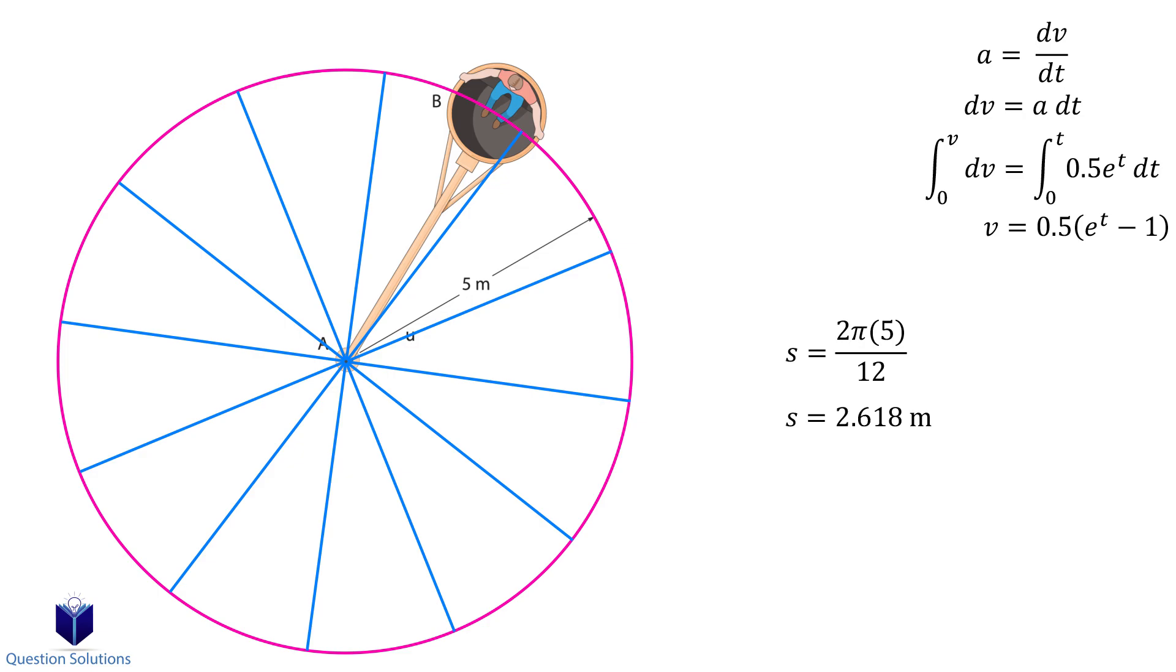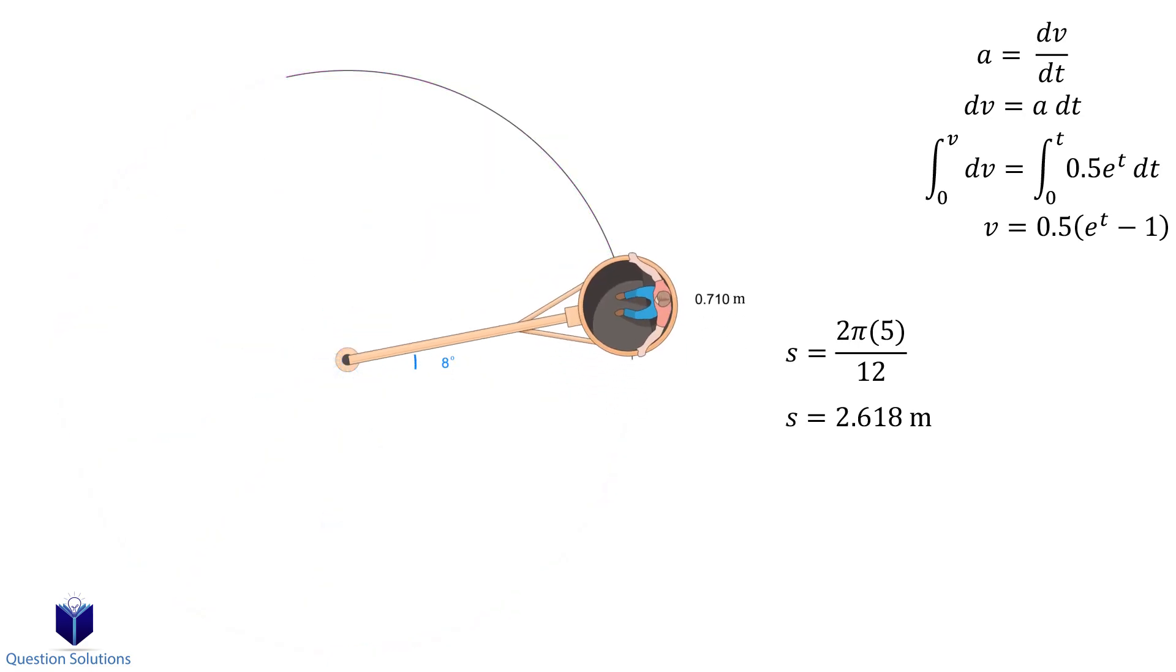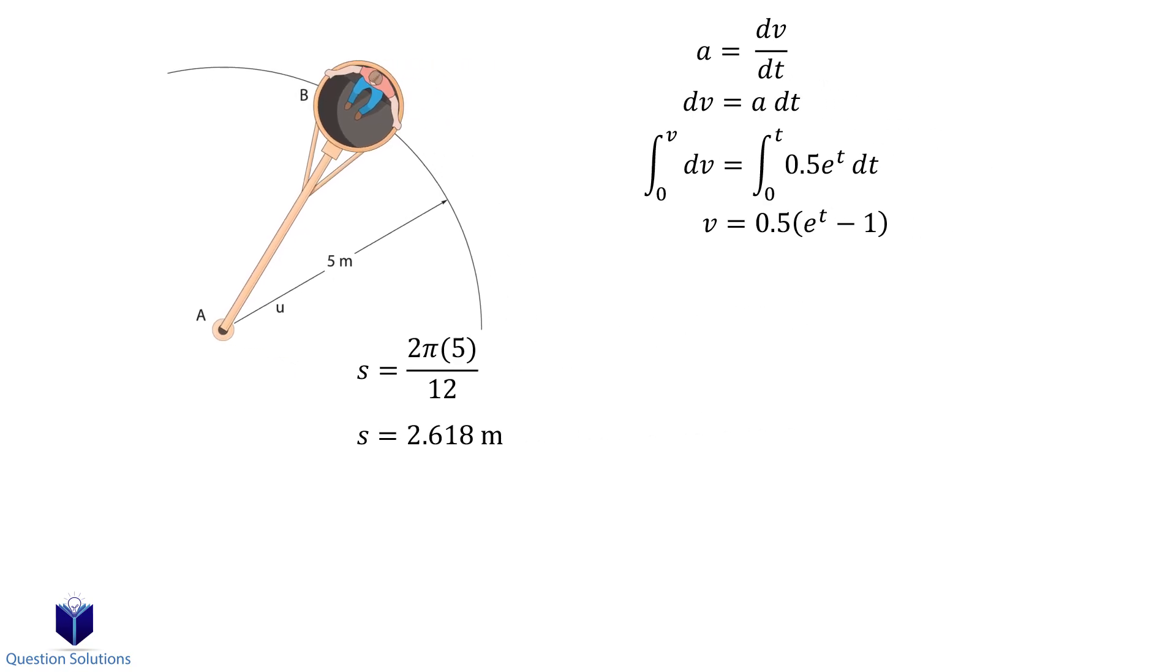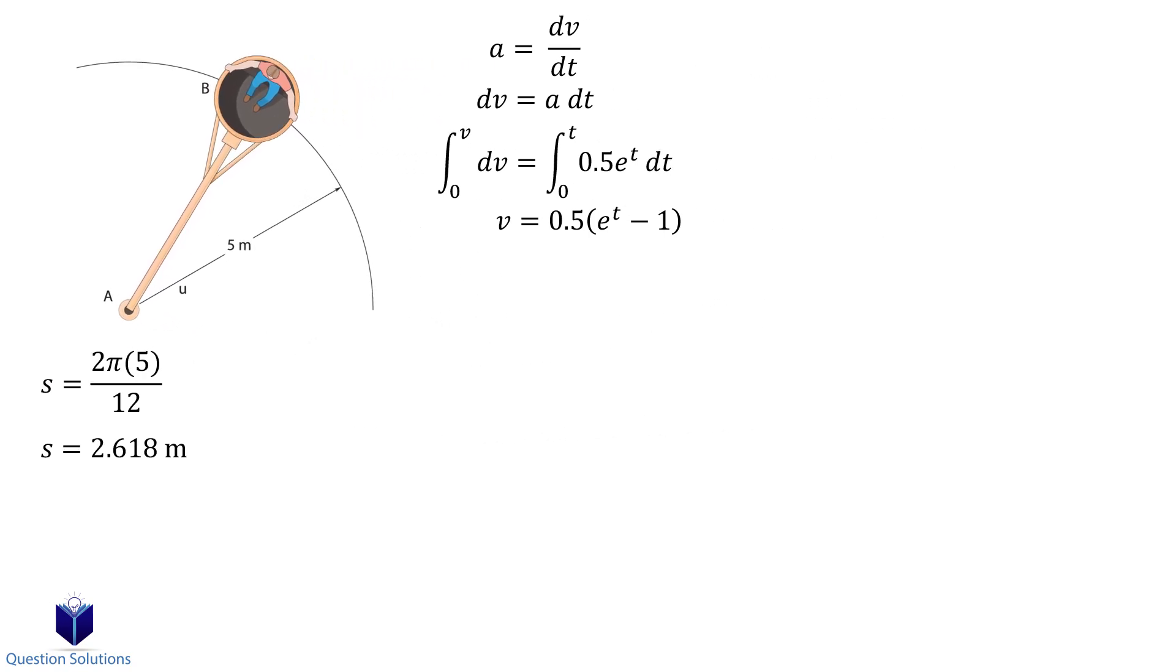So remember, that means when the arm spins 30 degrees, the distance it travels is 2.618 meters. Now back to an equation relating distance and velocity. We know velocity is ds over dt. We can write it as ds is equal to v dt.